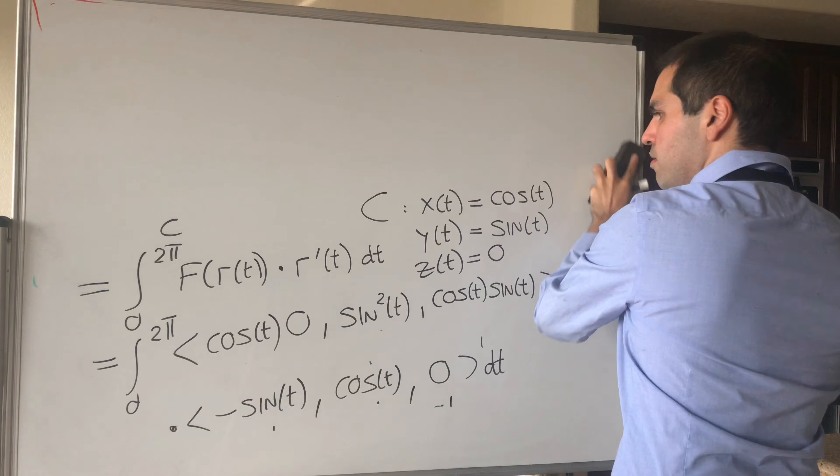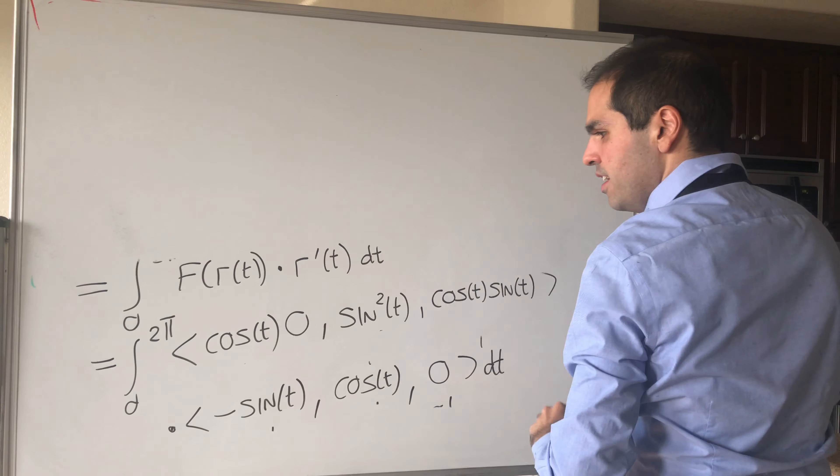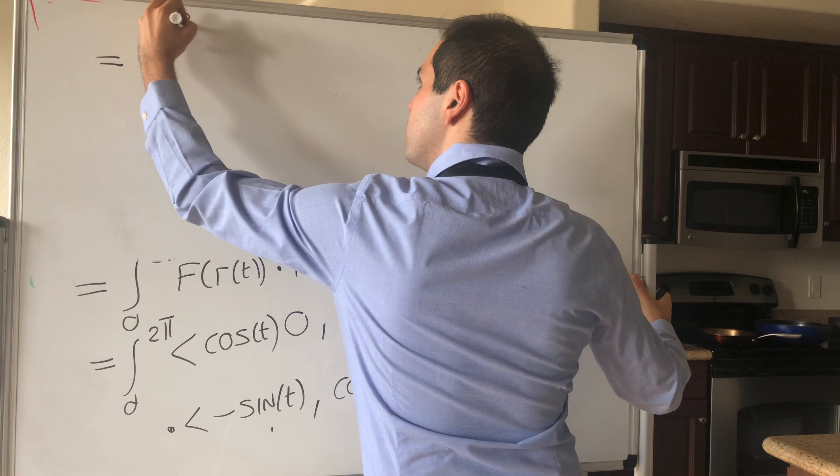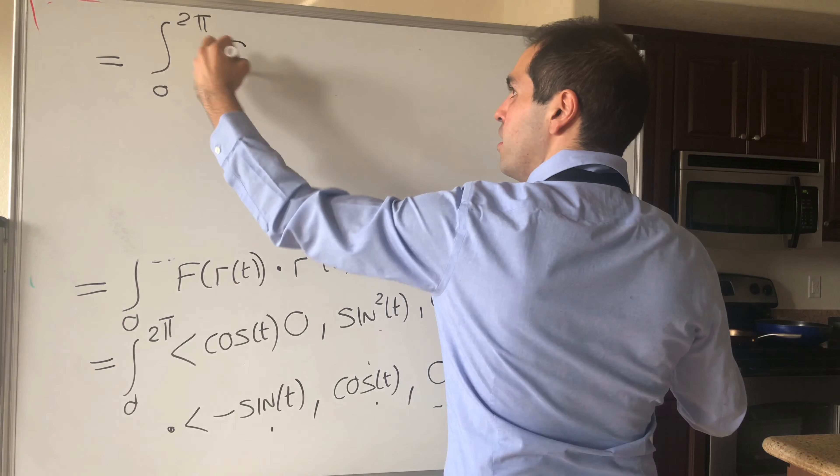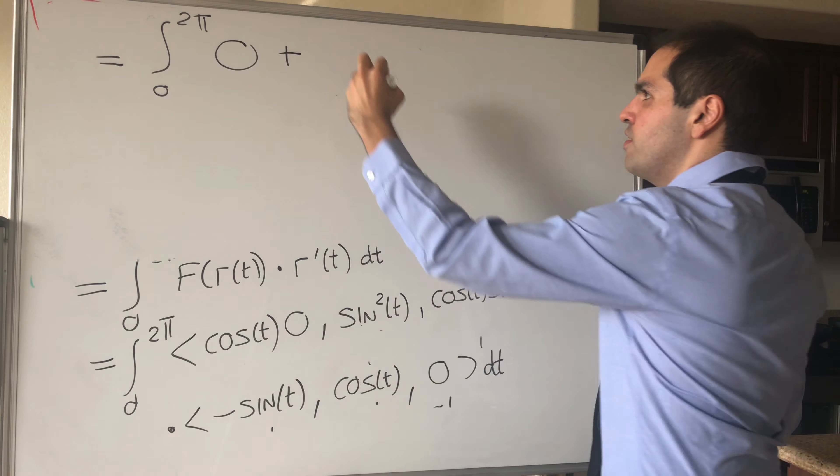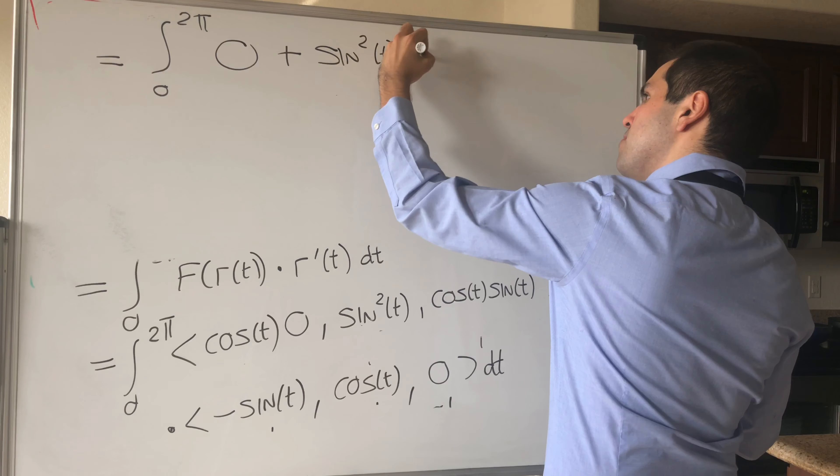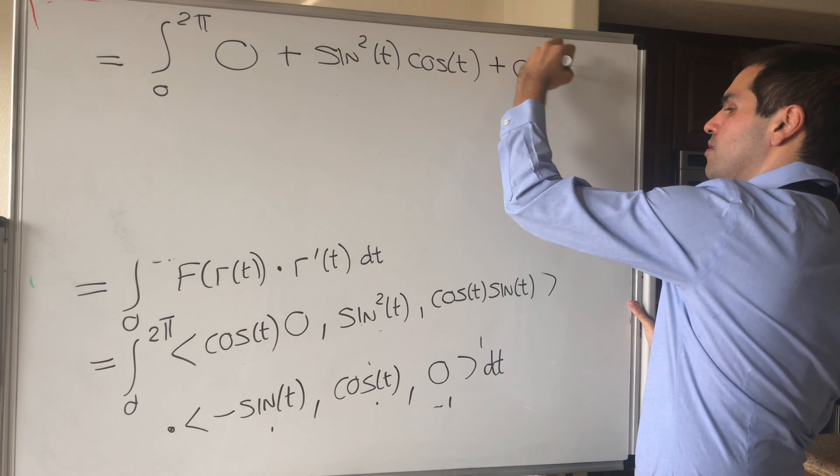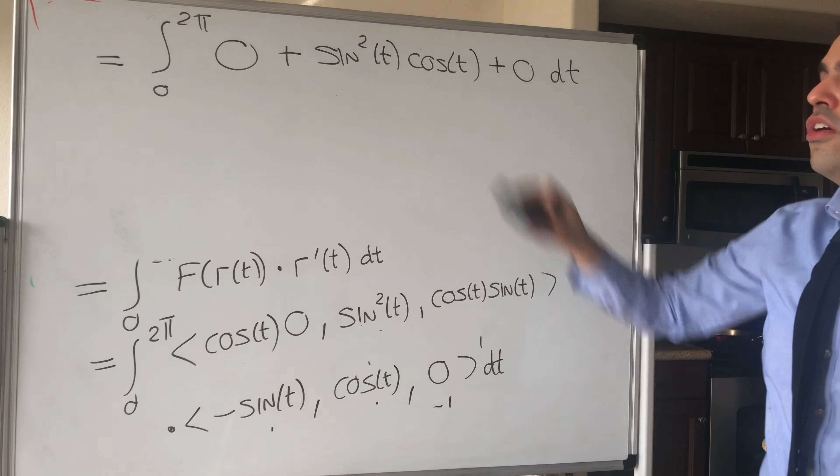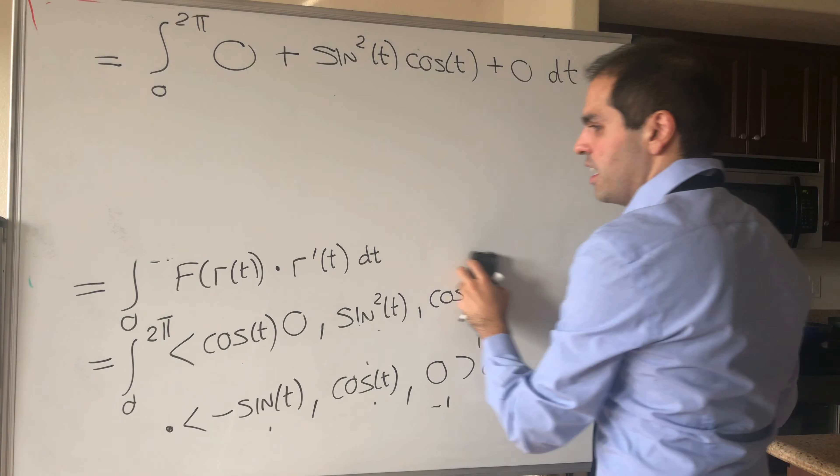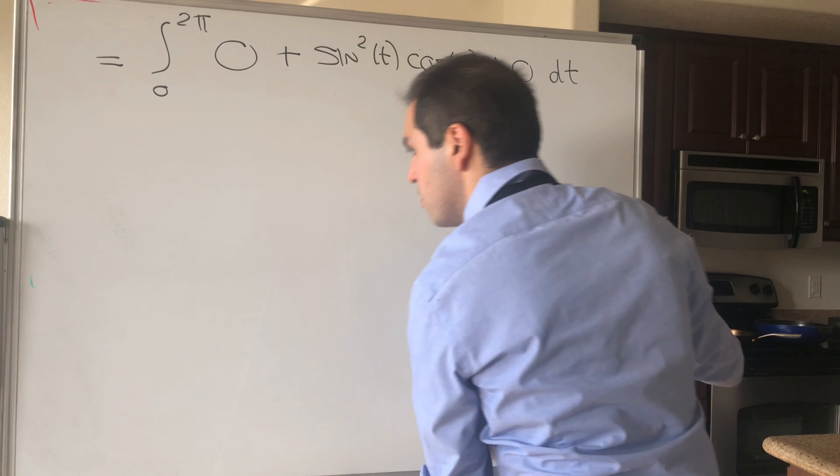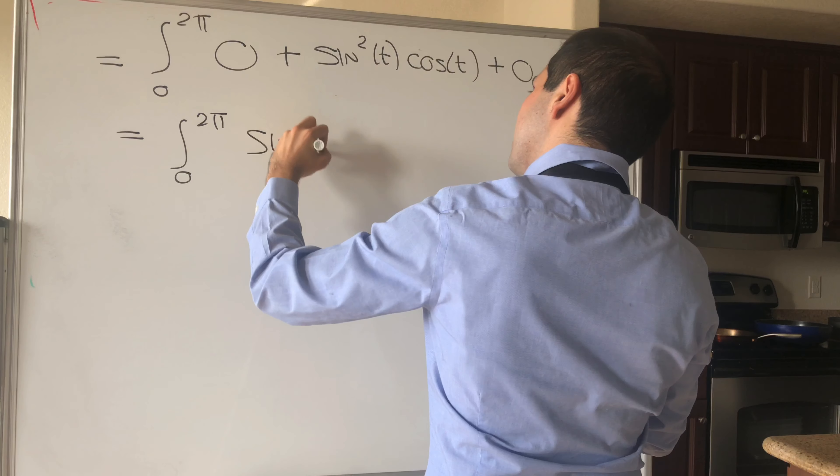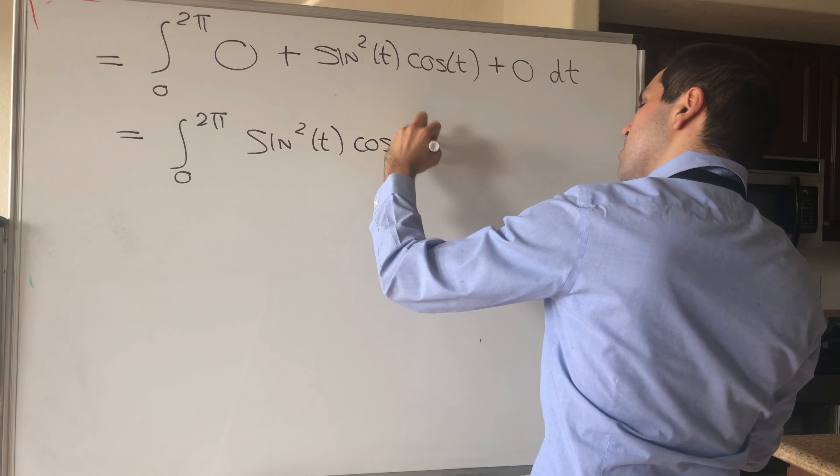So, in fact, what you get, this simplifies tremendously. This becomes simply integral from 0 to 2 pi, 0 times something, so just 0, sine squared of t times cosine t, plus cosine t sine t times 0, plus 0 dt. And so, in the end, all you need to do is just evaluate sine squared times cosine. And you're left with integral from 0 to 2 pi, sine squared of t cosine of t dt.